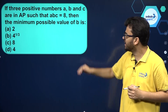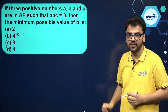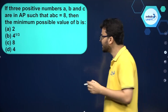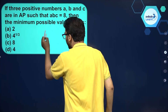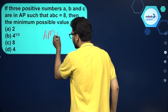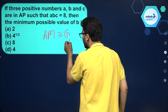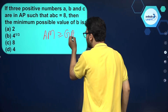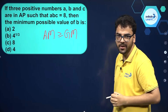Since these numbers are positive, we can say that AM will be greater than or equal to GM. We know this property that arithmetic mean is greater than or equal to geometric mean.